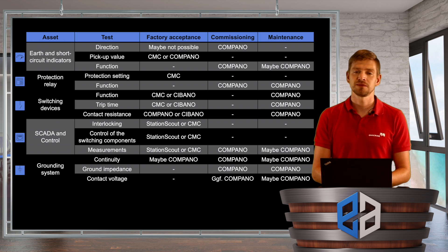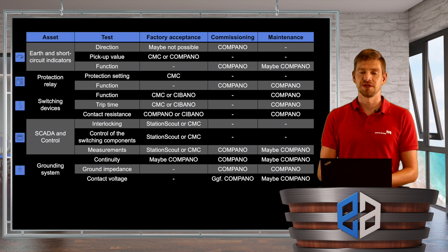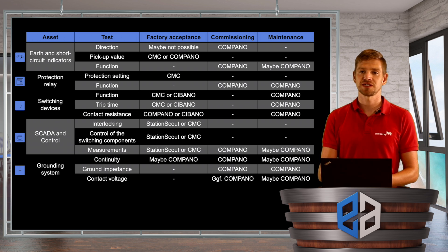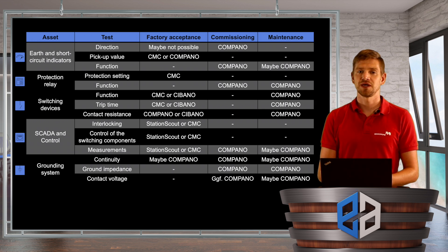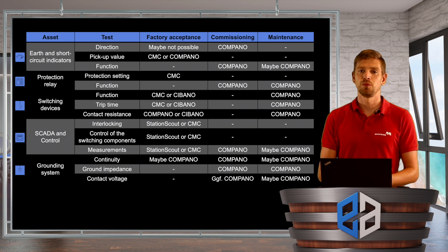The same applies for the switching devices — with the CMC or C-Bano you can focus on function and trip time or contact resistance. In maintenance you can perform simple checks with the Compano. For SCADA, depending on the standard used — for example IEC 61850 — you can use the Station Scout or the CMC for comprehensive testing, and simpler devices for commissioning and maintenance. For the grounding system where continuity is important, you can use the Compano for contact resistance measurement, or even perform ground impedance or contact voltage tests. In summary, for the factory acceptance test you go into more detail with comprehensive testing devices, while for commissioning or maintenance on site a single-phase device is often sufficient.